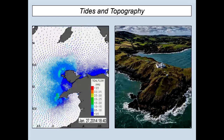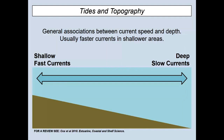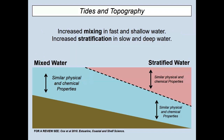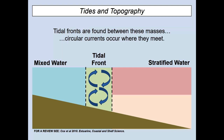Apologies to any oceanographers — this is oversimplified — but in a typical scenario you get fast currents in shallow water and slow currents in deep water. This leads to a pattern in stratification: where it's shallow with fast currents, you get mixed water with similar properties across depths; further offshore in deep, slow water, you get vertical stratification with different physical and chemical properties at the surface versus the seabed. Between these two bodies of water you tend to get tidal fronts, where mixed water meets stratified water with complex circular currents.